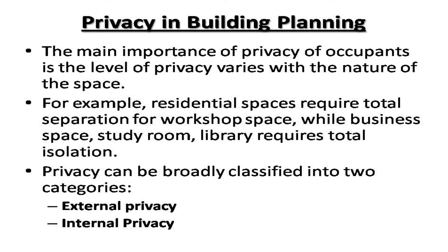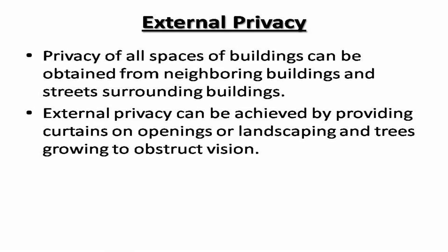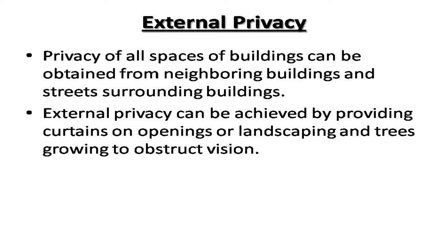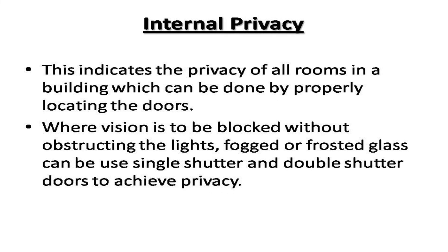Privacy in building planning is of main importance, and the level of privacy varies with the nature of the space. Residential spaces require total separation from workshop spaces, while study rooms and libraries require total isolation. Privacy is broadly classified into external privacy and internal privacy. External privacy of all spaces can be obtained from neighboring buildings and streets by providing curtains on openings, or by landscaping and trees to obstruct vision. Internal privacy is achieved by properly locating doors where vision is to be blocked; frosted glass, single shutter, and double shutter doors can also be used.